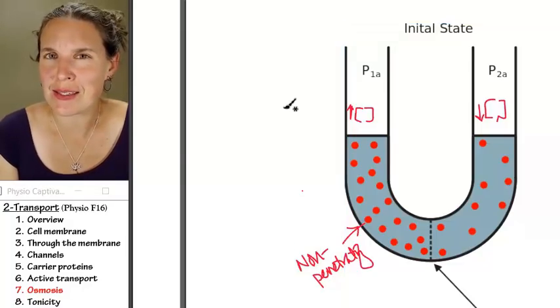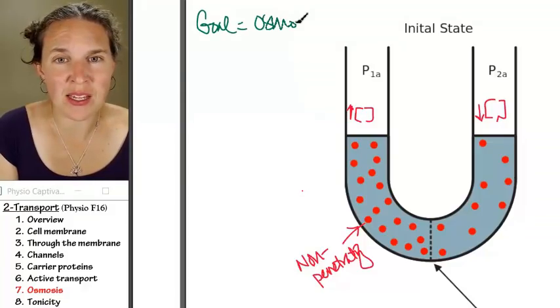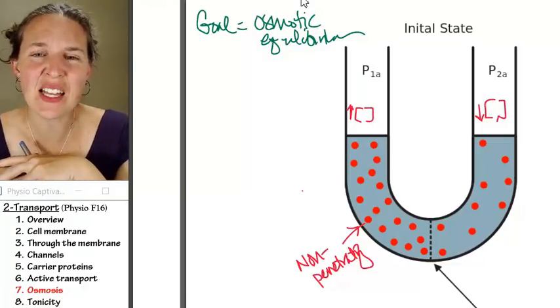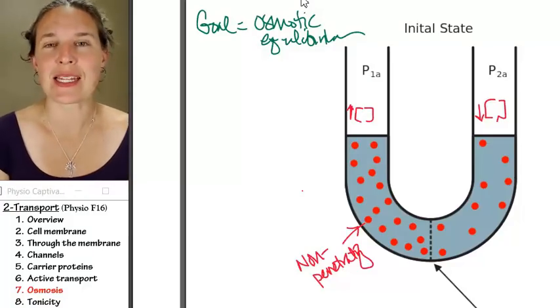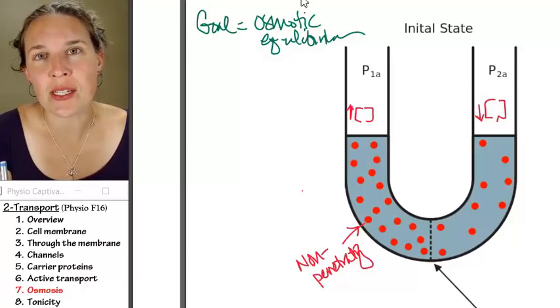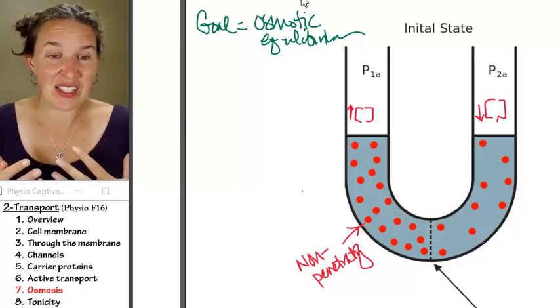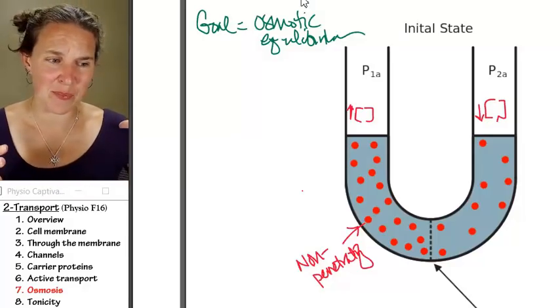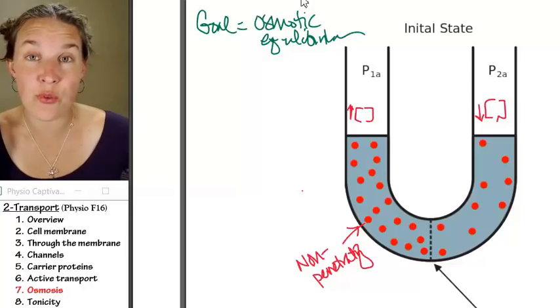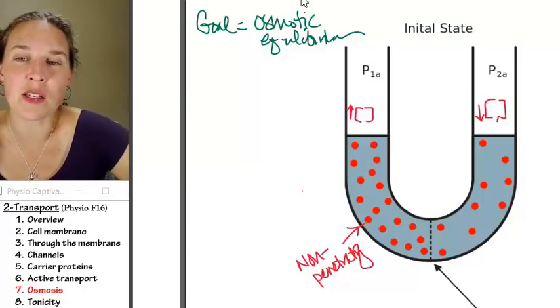Do you think that the cell does? The goal at all times is osmotic equilibrium. It's not like the cell is sitting here going, how am I going to get osmotic equilibrium? It's what automatically happens. Just like diffusion happens, particles move randomly from areas of high concentration to areas of low concentration. It just happens.